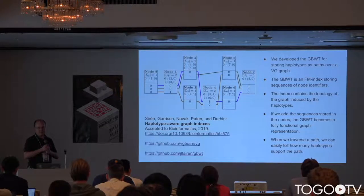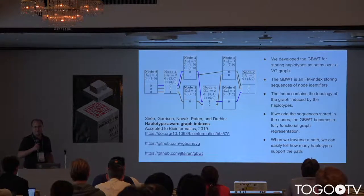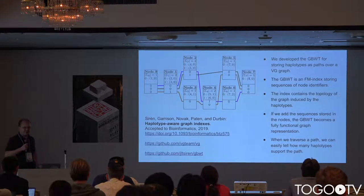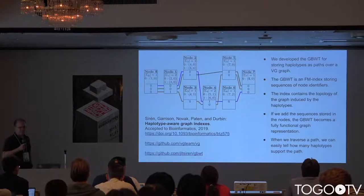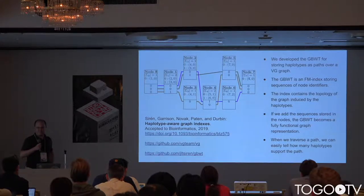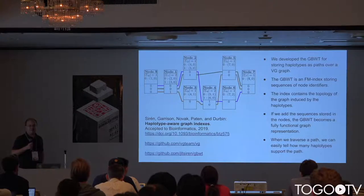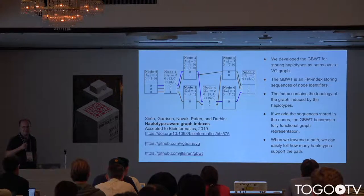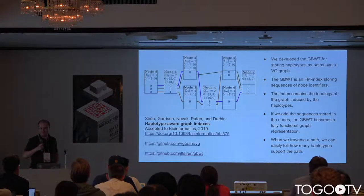It's based on the GBWT, as you might guess, which we developed for storing haplotypes of paths over the VG graph. Paths are really node sequences which we store in an FM index.